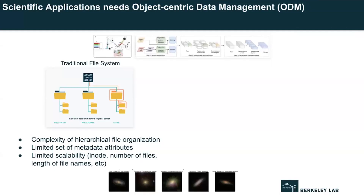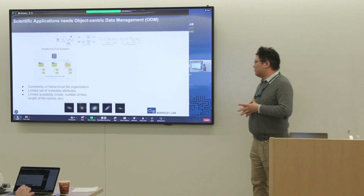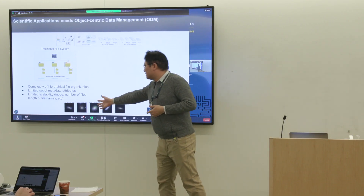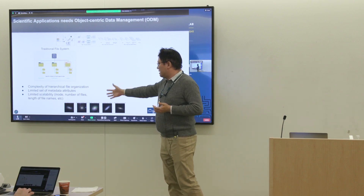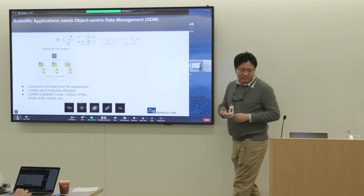For example, consider the neuron photos collected by the lattice light sheet microscopy. The data can be further sliced into multiple 3D tiles, each attached with multiple user-defined metadata attributes. And for the Sloan Digital Sky Survey dataset, there can be many celestial objects described by different metadata attributes.